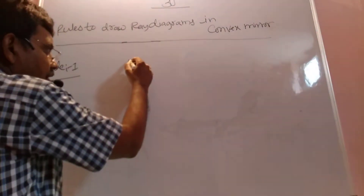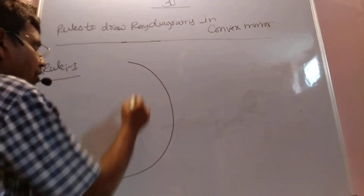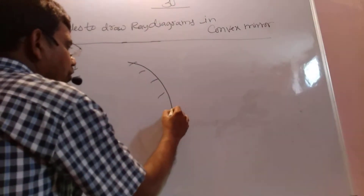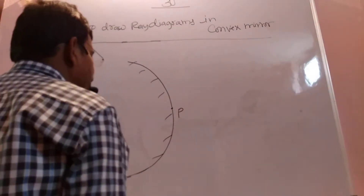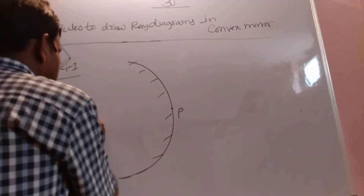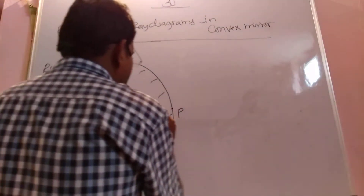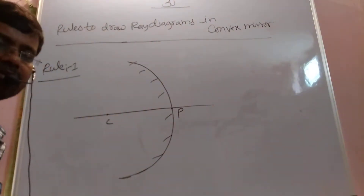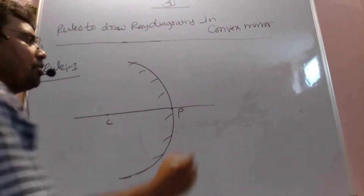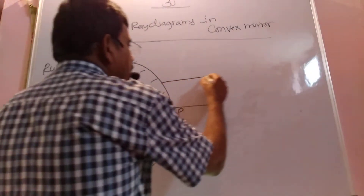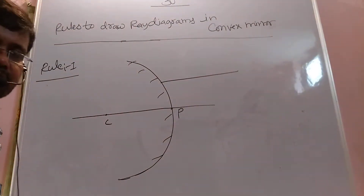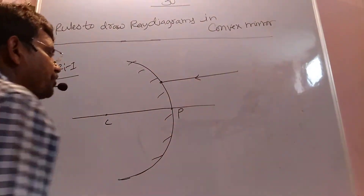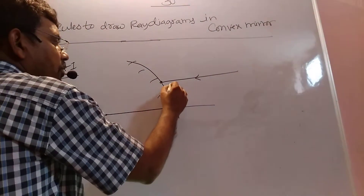I am taking a convex mirror. This is the pole, and this is my principal axis. This is my center of curvature. One beam of light is coming parallel to the principal axis, and this beam of light is incident on the mirror surface at a point I am taking as point A.